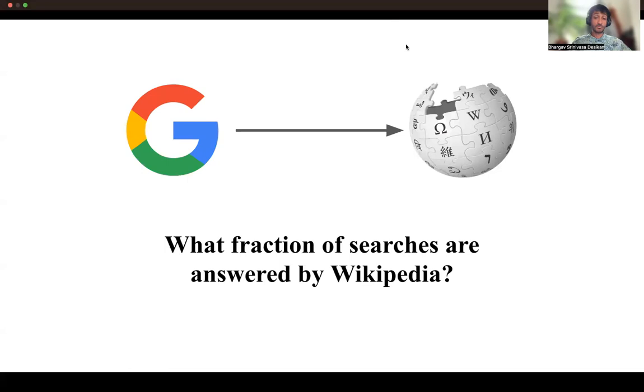So for some context, why is it important to know what fraction of searches are answered by Wikipedia? This question has been important for as long as Google and Wikipedia have been around.